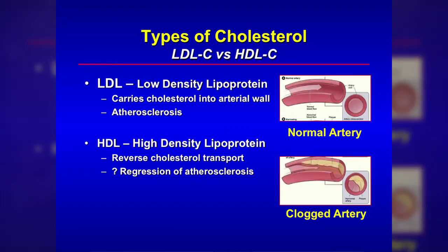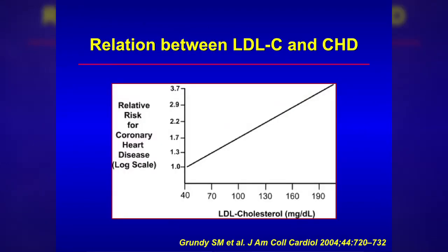The high-density lipoprotein — the HDL — can actually get into those fatty deposits and assist in removing that plaque, causing regression of atherosclerosis. Now let's look at the relationship between LDL cholesterol, the bad cholesterol, and risk for coronary heart disease. This data is derived from the Framingham Heart Study, a very large prospective cohort study. As the LDL cholesterol goes up, there's an increased risk for the development of coronary heart disease, and this has been replicated in a number of prospective cohort studies.